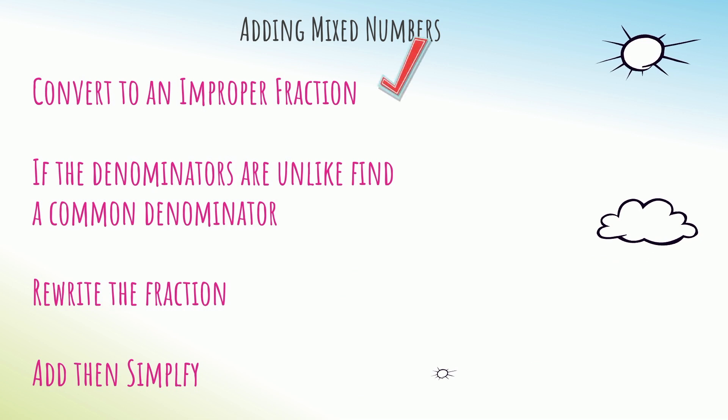We're going to first convert to an improper fraction. If the denominators are unlike, we're going to find a common denominator. We're going to rewrite the fraction and then we'll simplify if possible. So let's get started.